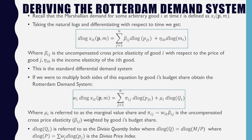If we multiply both sides by equation i's budget share, we obtain the Rotterdam Demand System, where mu_i is referred to as the marginal value share, and pi_ij is the uncompensated cross price elasticity weighted by good i's budget share.